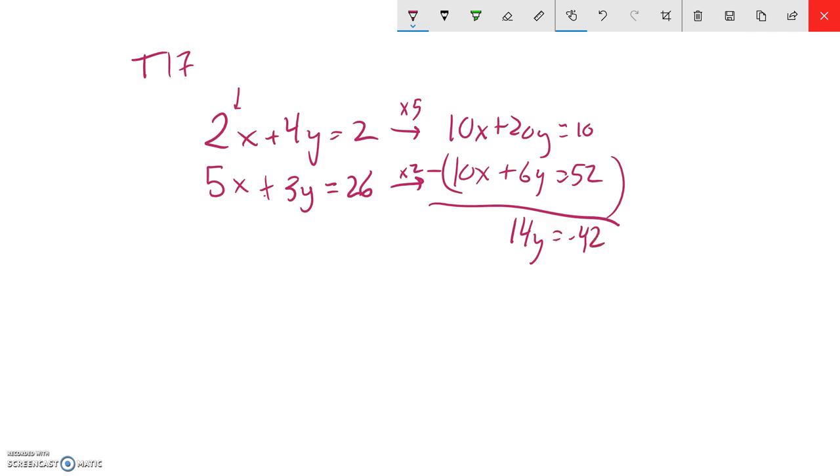Great, so far so good. Now I'm going to figure out what y is. I can take that 42 and divide it by 14, and I get negative 3. So if y is negative 3, I can plug it back in and get the x value.